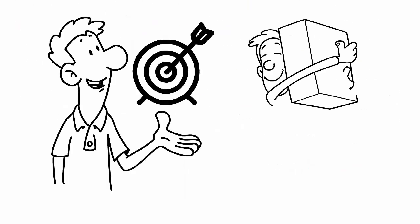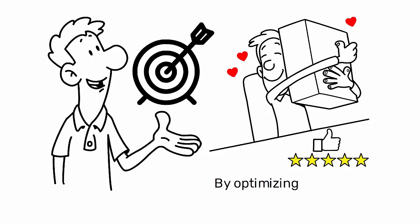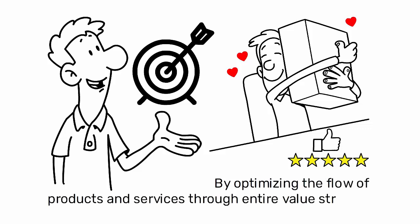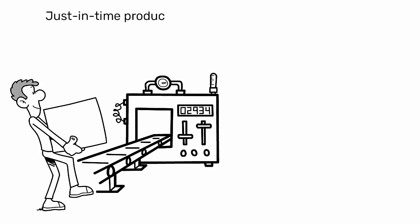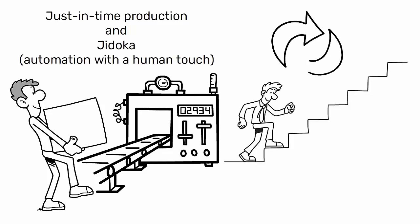The goal of Lean is to create more value for customers by optimizing the flow of products and services through entire value streams. It emphasizes the principles of just-in-time production and Jidoka (automation with a human touch), and promotes a culture of continuous improvement, Kaizen.